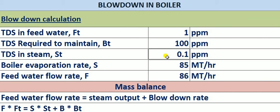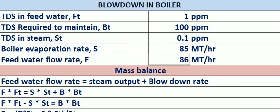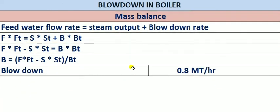TDS in the steam: normally there is condensation from the steam sampling, and from that condensate we measure the TDS — in our case it is 0.1 ppm. The steam output flow rate (evaporation rate) of the boiler is 85 tons per hour, and the feed water flow rate is 86 tons per hour. For the formula derivation, we use a mass balance: feed water input equals steam output plus blowdown rate. Steam leakage losses are not considered in this typical case.